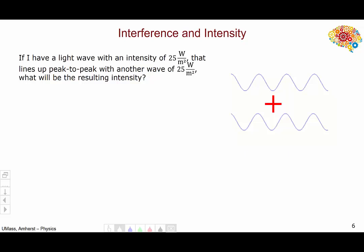So, here's an example of converting from intensity back to amplitude to determine interference. Let's say I have a light wave with an intensity of 25 watts per square meter, and that wave lines up peak to peak with another wave of 25 watts per square meter. What will the resulting intensity be? Well, I know that the intensity of a light wave is one-half the speed of light times epsilon-nought times the amplitude squared, which rearranging gives me an amplitude per wave of 137.2 newtons per coulomb.